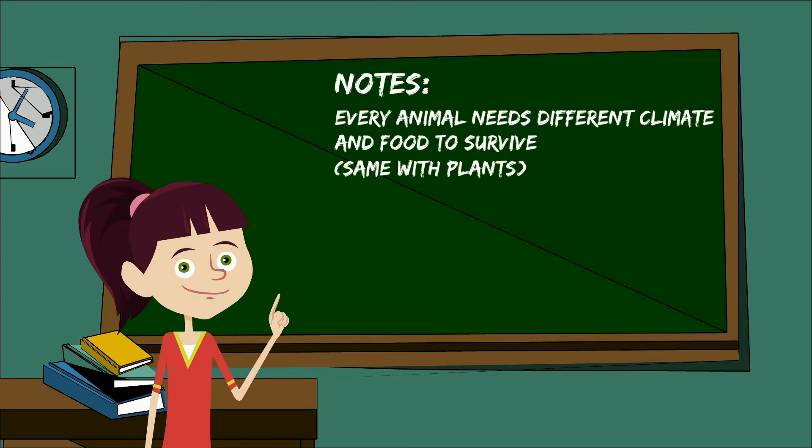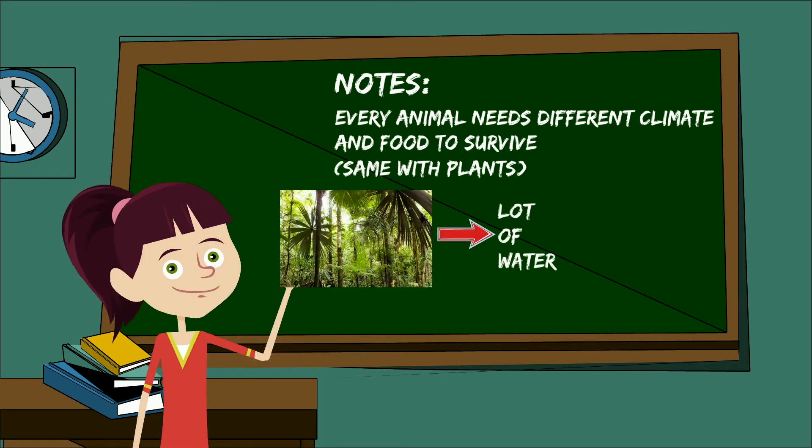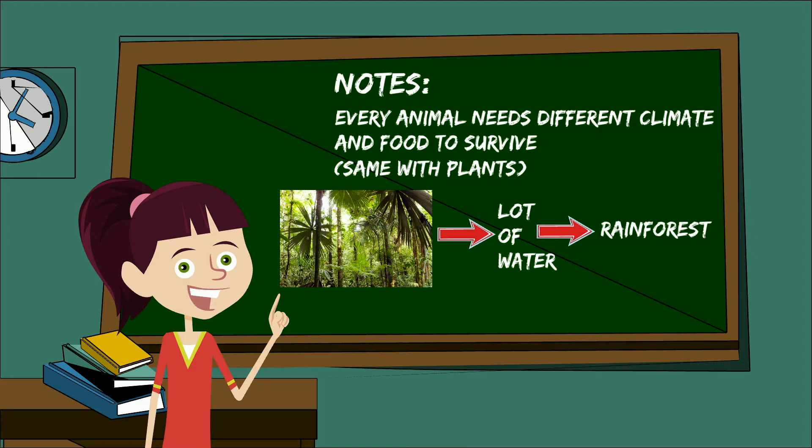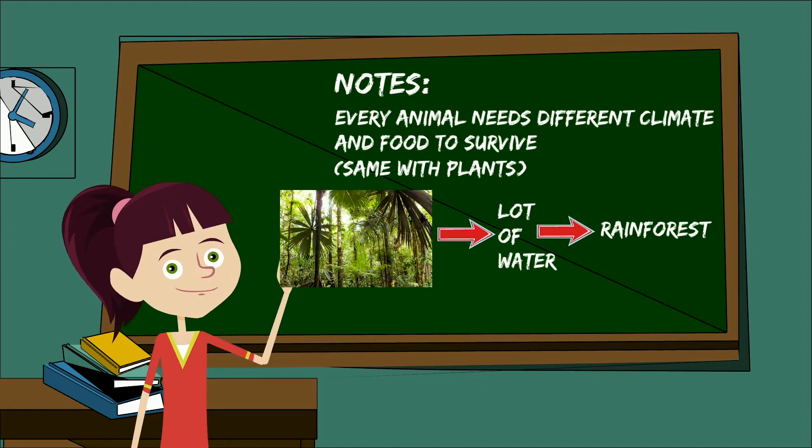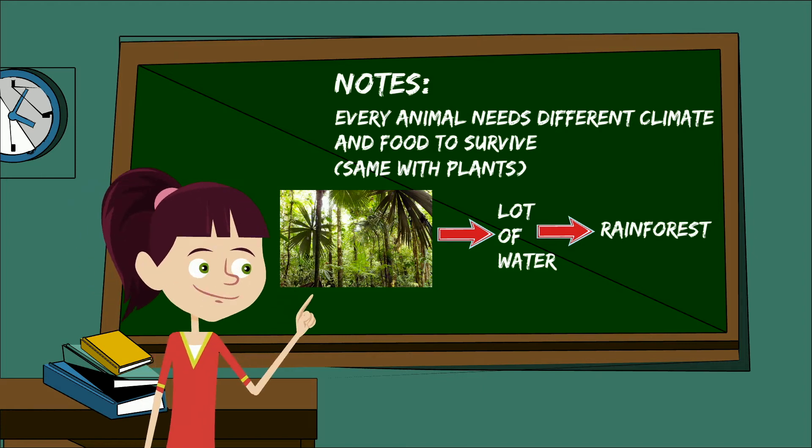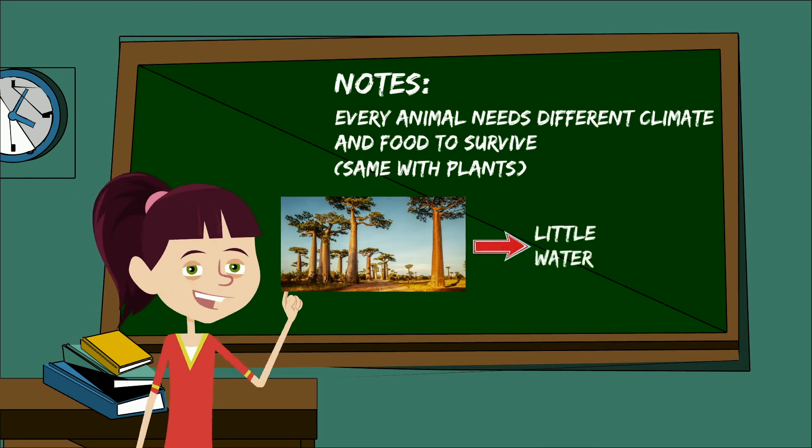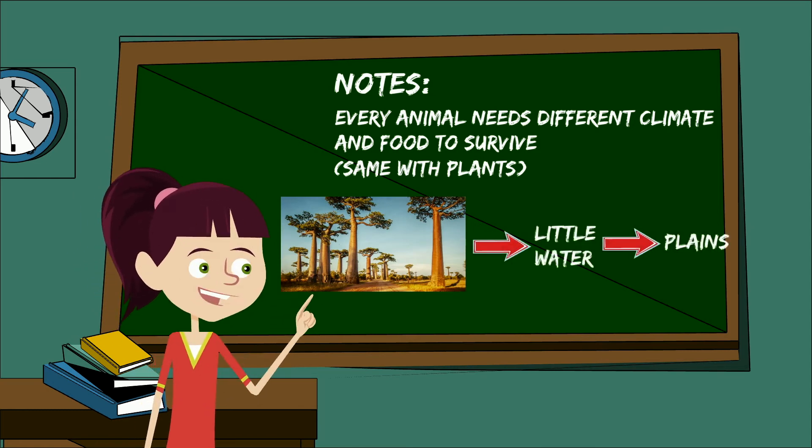This is the same with plants. The palm trees need a lot of water, so they live in the rainforest where it rains every day. The baobab, on the other hand, does not need that much water, so it lives in the plains where it rains only for a couple of months.